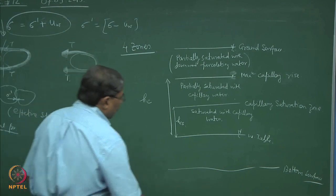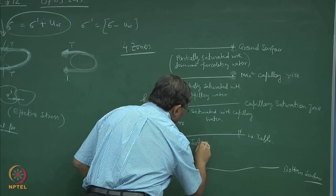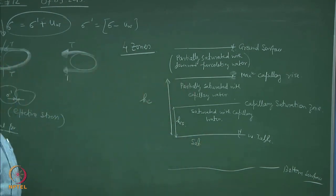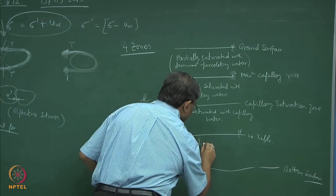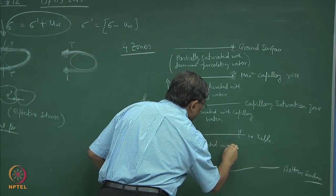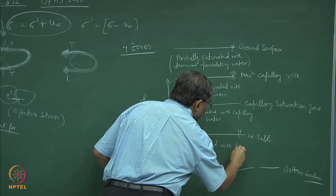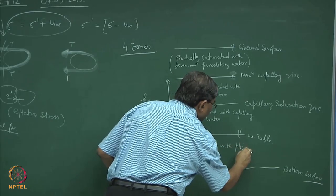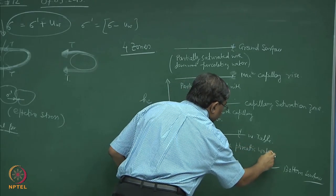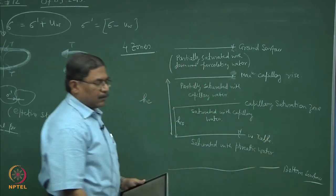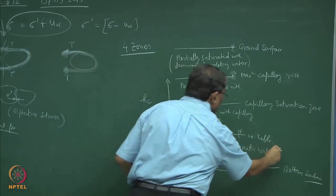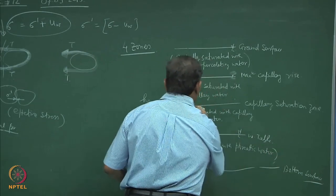This one — the zone below the water table — is saturated with phreatic water. So this is one zone, and this is another zone.